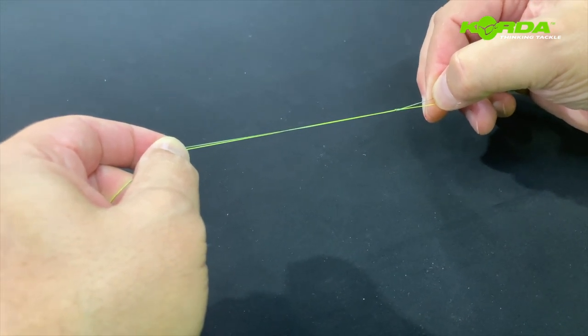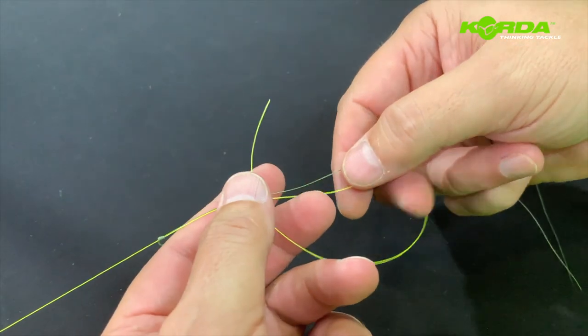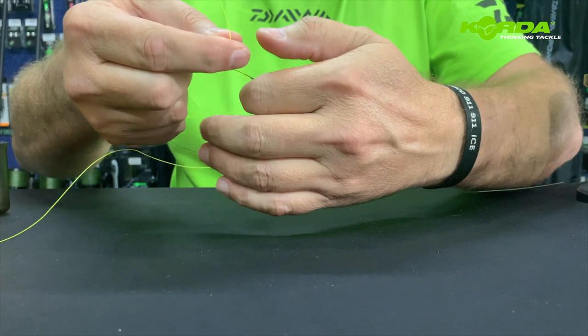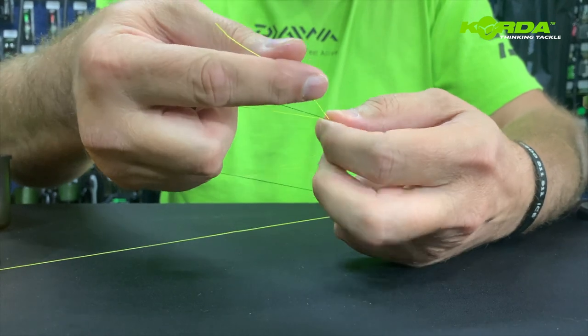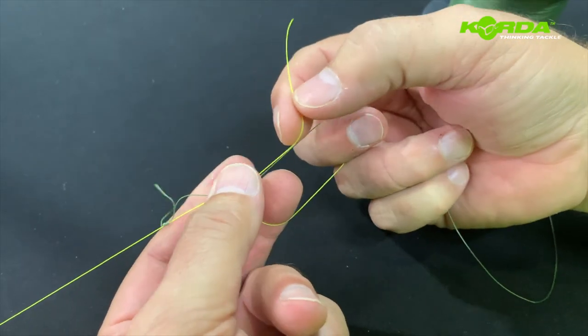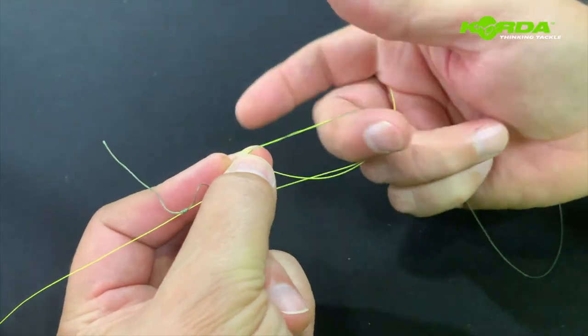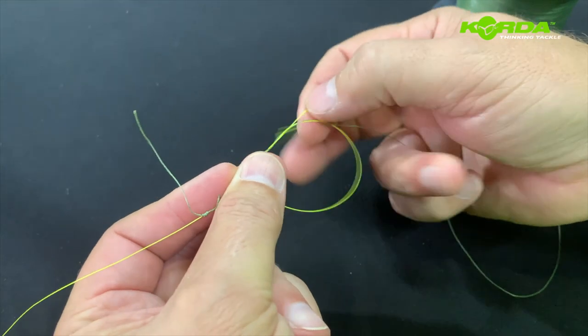Then take the yellow line and create exactly the same loop. I'm left-handed, so excuse me for this. I create the double loop, take the leader line, and fold it around the green line and the yellow line once, two, three, and four turns. You don't need to go more than that.